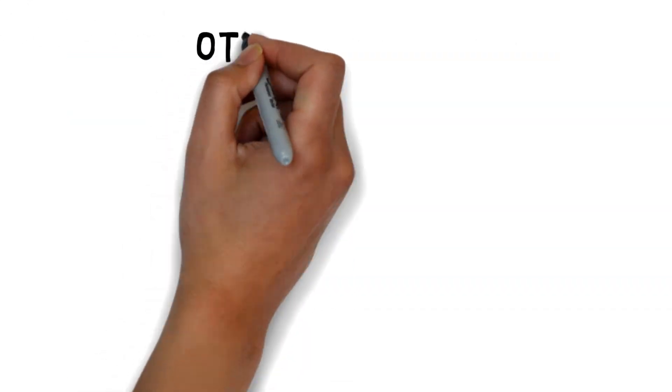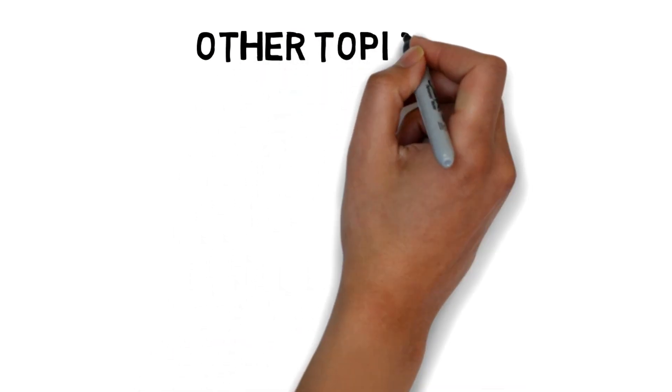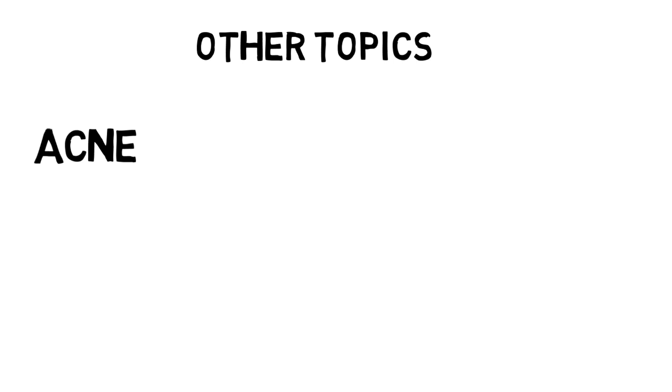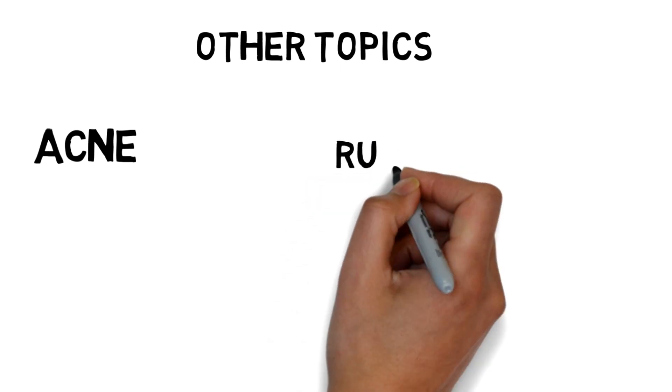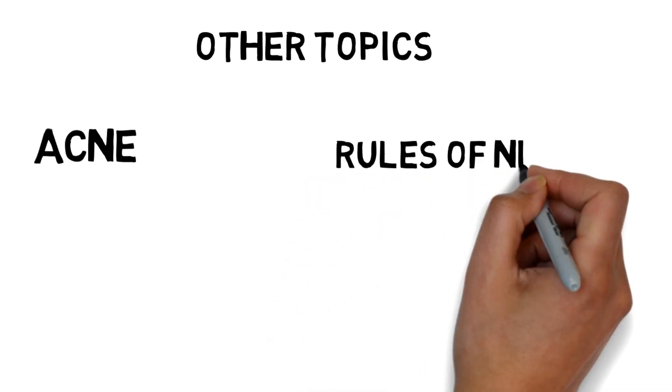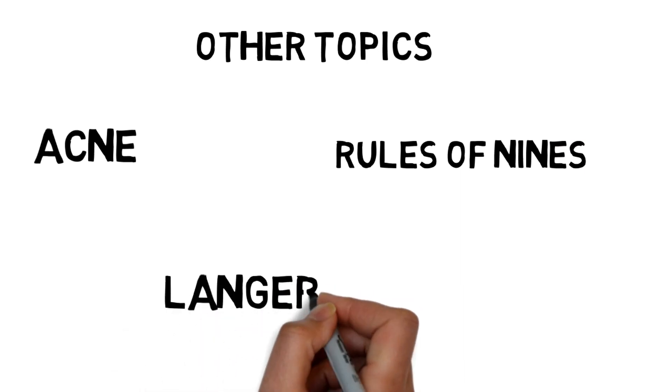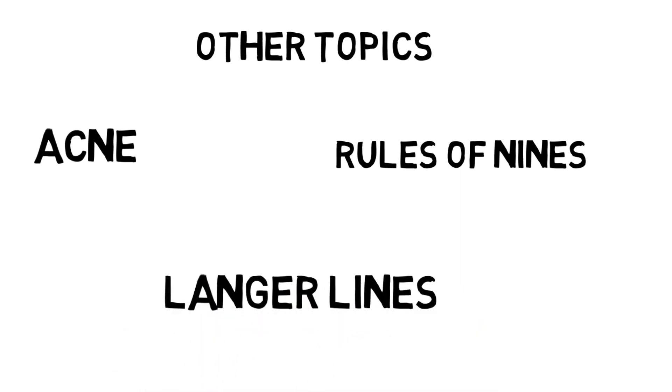Now, there are certain other topics also such as acne and all those things, but these are not at all important for your exams. From an exam point of view, the important things I have covered in this topic. There are certain things such as the Langer lines and the rule of nines—I will cover those in some next video. If you like my work, do leave a comment in the comment section.